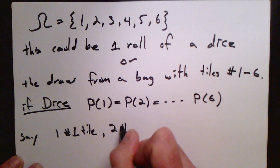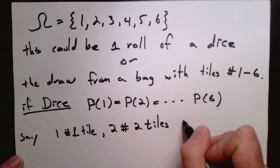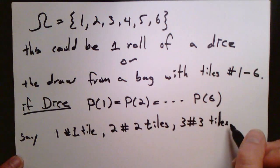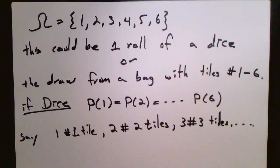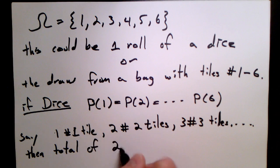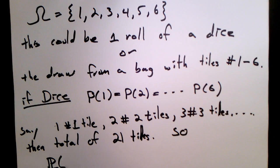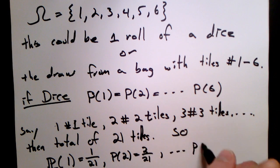Now, let's say that we have one tile numbered 1 in the bag example, and two tiles number 2, and so on, three tiles number 3, four tiles number 4, all the way up to six tiles numbered 6. And if you add that all up, you'll see that the total number of tiles is 21. And so then the chance of getting a tile numbered 1 would be 1 out of 21, and the chance of getting a tile numbered 2 would be 2 out of 21, and so on.